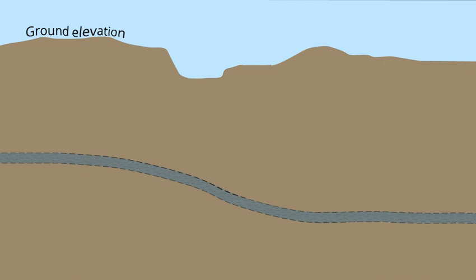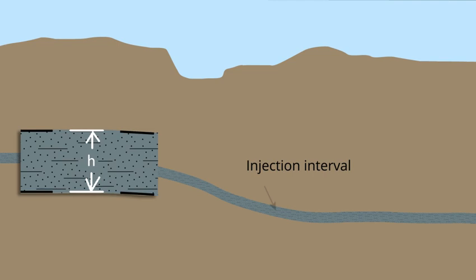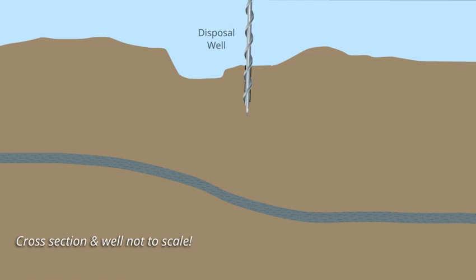You could also consider this to be the injection interval. The formation is shown as a constant thickness H, though that never actually occurs in nature.